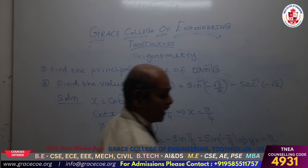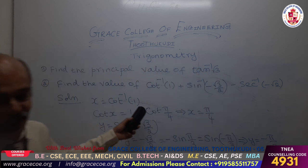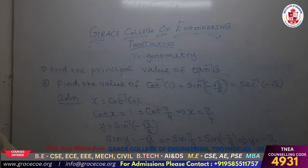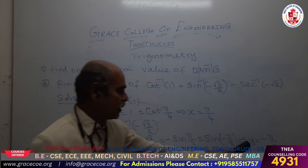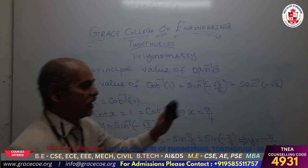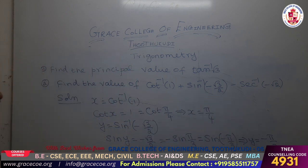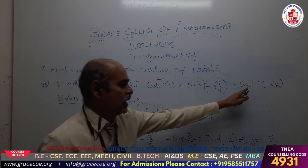So the second value is equal to minus pi by 3. In this case we will get 3 values. So the third value will be the secant inverse of minus root 2.